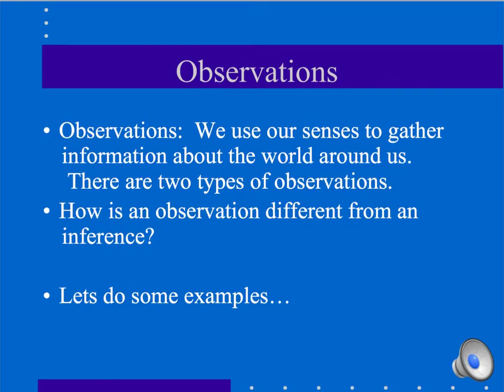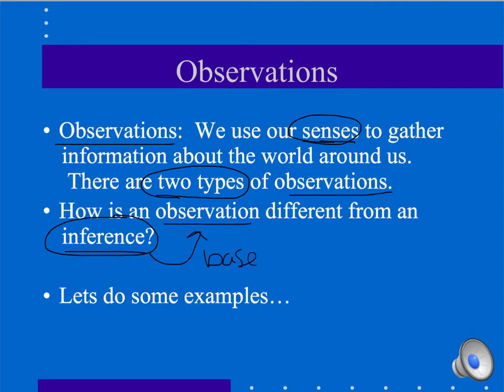Throughout an experiment, we always make observations. We use our senses to gather information about the world around us. There are actually two different types of observations that we're going to talk about. We also want to make sure that you understand the difference between an observation and an inference. An observation is something that we can actually sense. I can smell it, I can see it, I can hear it, I can touch it.